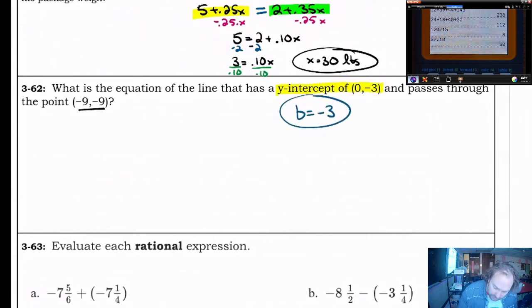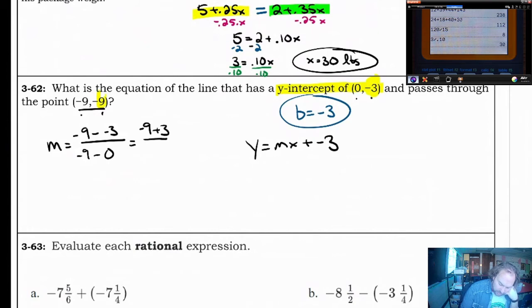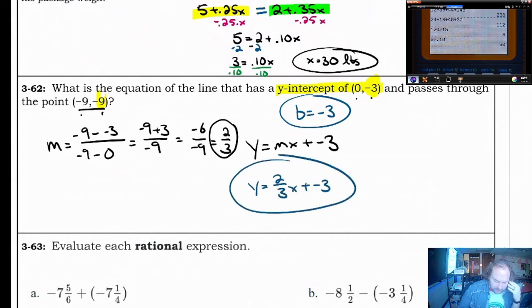So our equation right now, if you want to think about mx plus b, our equation looks kind of like that. It's also got to go through the point negative 9, negative 9. So what you could do is you could find the slope using the slope formula. You would just need to remember to subtract your y's, which would be like negative 9 and negative 3. And then since I did negative 9 and negative 3, I got to do negative 9 and 0. Negative 9 plus 3 on top is going to be equal to negative 6. And negative 9 minus 0 on bottom is just going to be negative 9. That's going to equal positive 6 over 9. And we can reduce it to 2 thirds. So our equation is going to be y equals 2 thirds x plus negative 3.